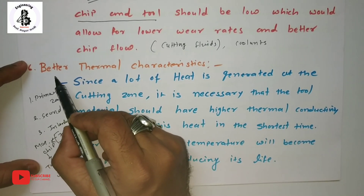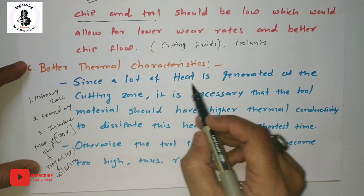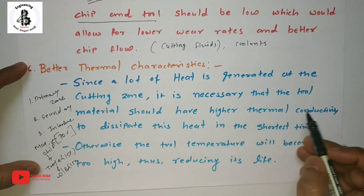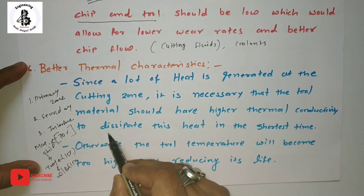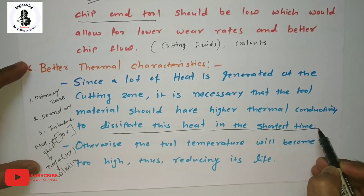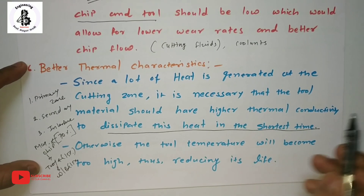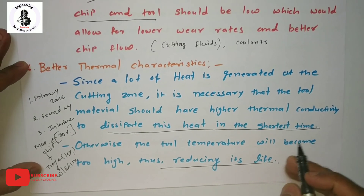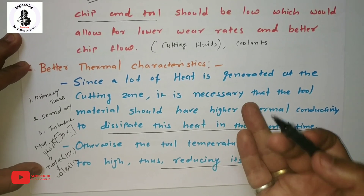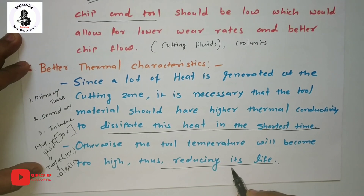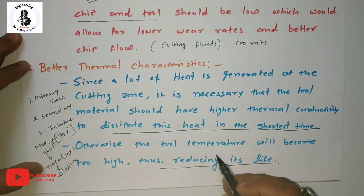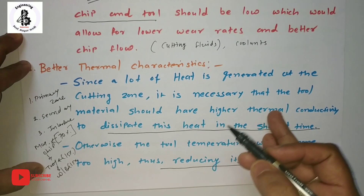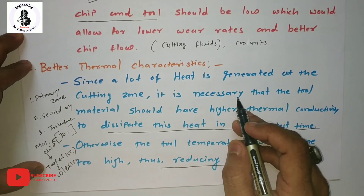For better thermal characteristics, since a lot of heat is generated at the cutting zone, it is necessary that the tool material have higher thermal conductivity to dissipate heat in a short time. Otherwise, the tool temperature will become too high, reducing tool life. This also brings us back to hot hardness — such properties are required at elevated temperatures so that if heat cannot be fully dissipated, the tool retains its hardness.